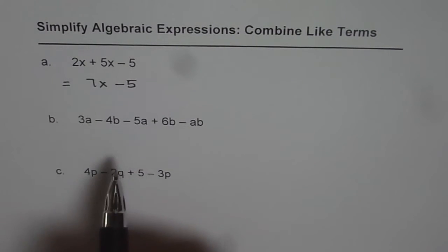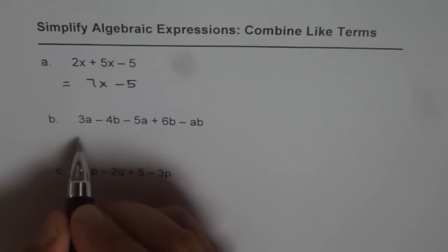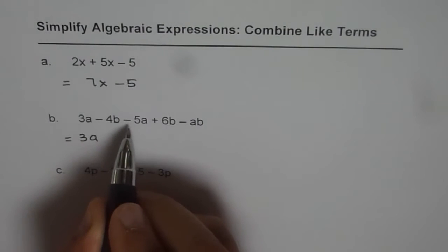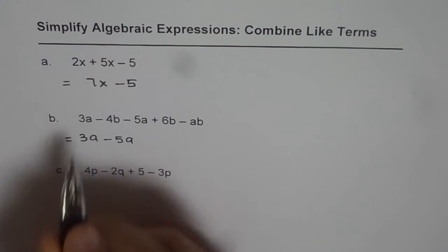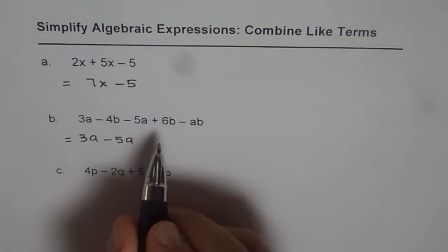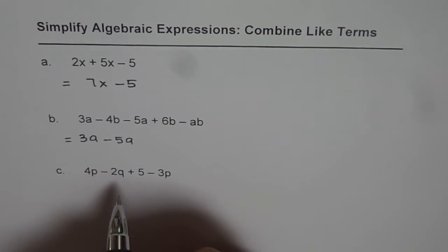Now, let us bring the like terms together. We can write this expression as 3a, and then we have minus 5a. I am writing minus 5a close to 3a. There is no other term with just a as the variable.